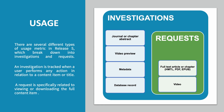There are several different types of usage metric in Release 5, which break down into investigations and requests. An investigation is tracked when a user performs any action in relation to a content item, such as a journal article, book chapter or video record, or to a title, such as a book or journal.